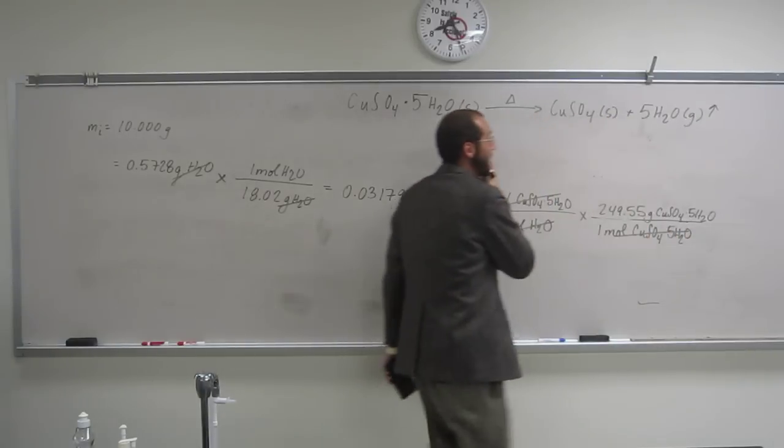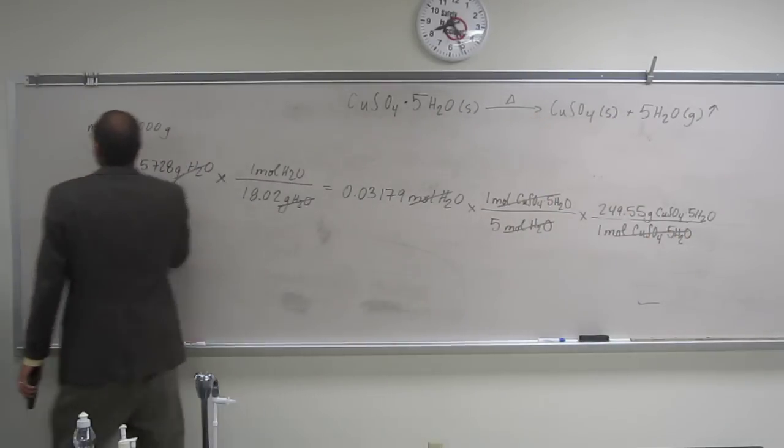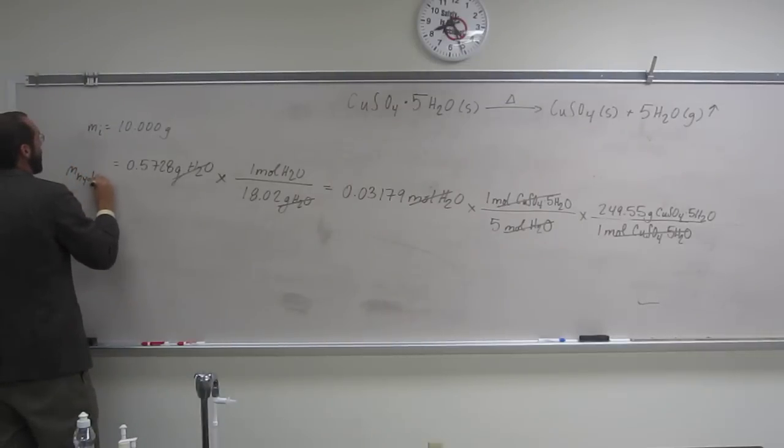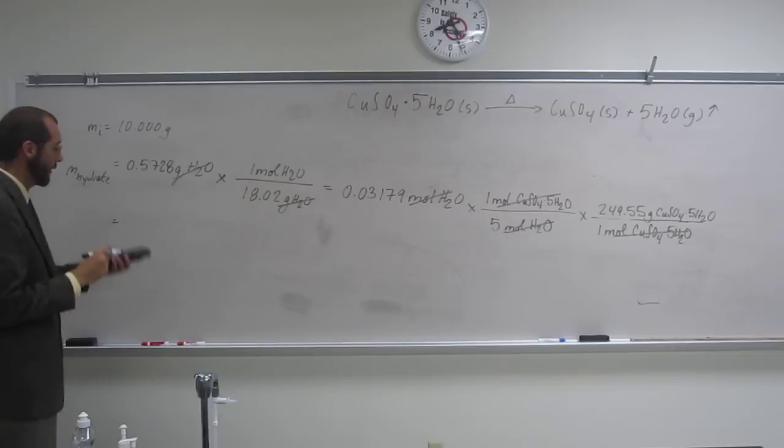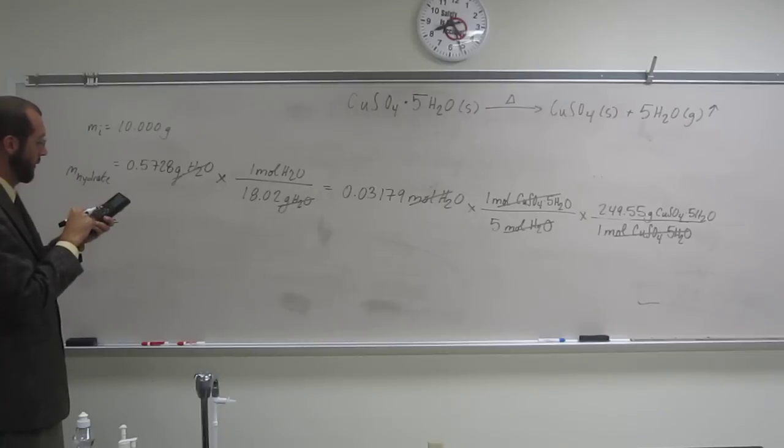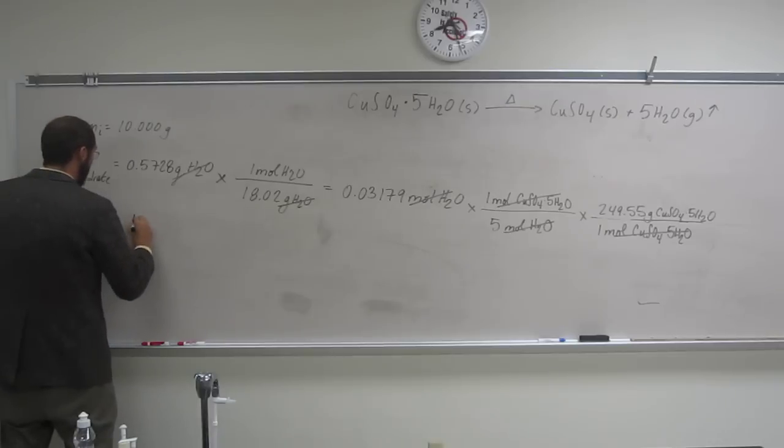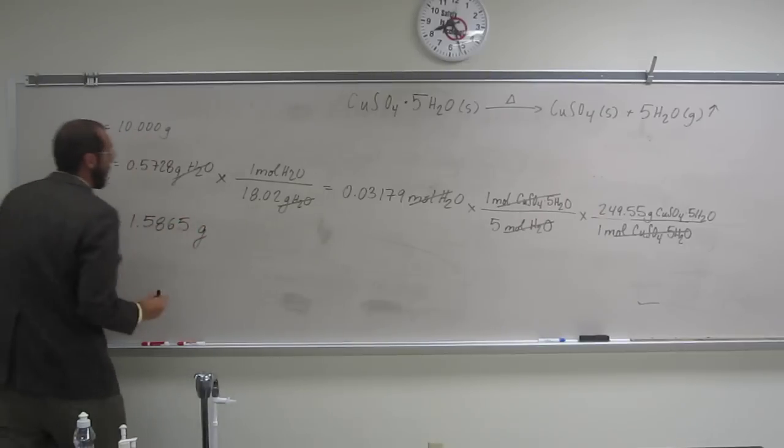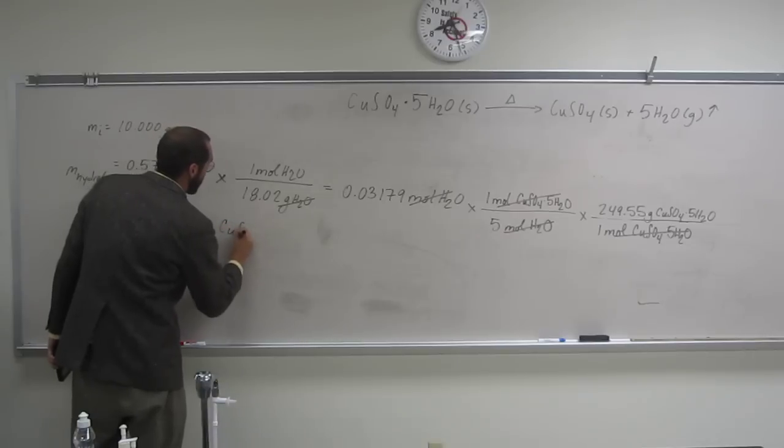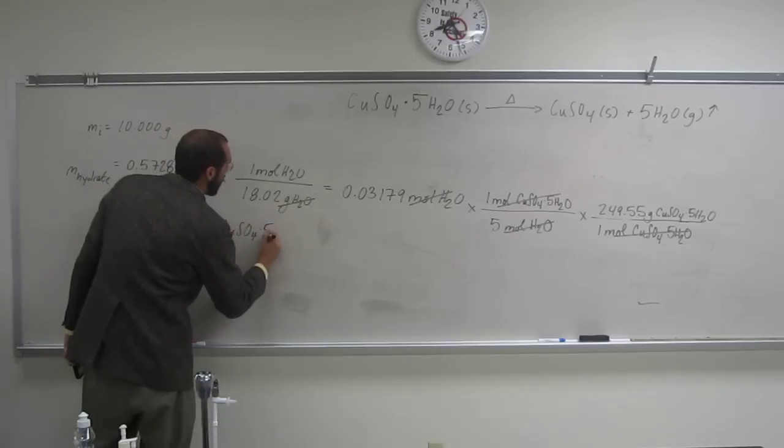So, that's going to give us now the mass of the hydrate. That's almost what we're looking for. So, let's just calculate that out. And I got 1.586 grams of the copper sulfate pentahydrate.